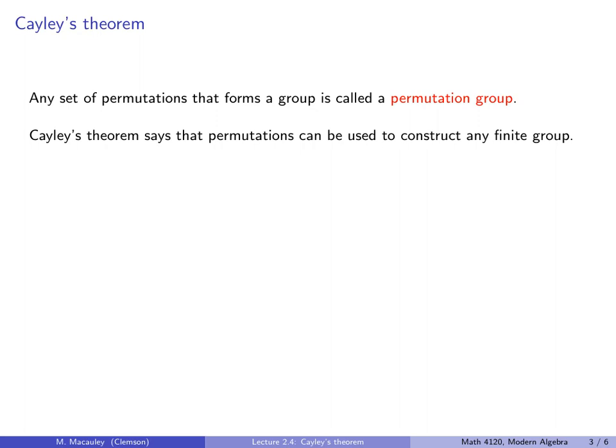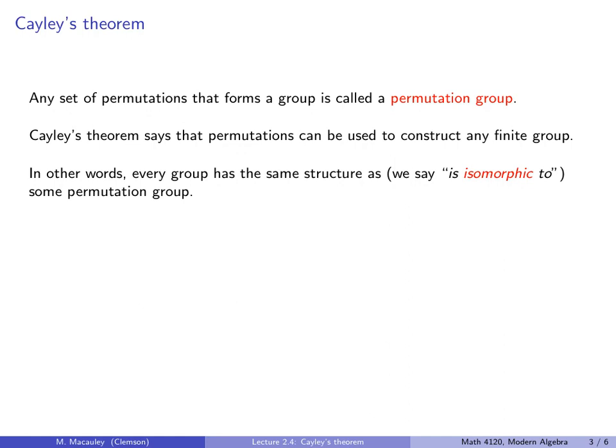Cayley's Theorem says that permutations can be used to construct any finite group. In other words, every group has the same structure as, the fancy word is, is isomorphic to some permutation group. And we will study later what it means to be isomorphic to. That's a big topic later on.